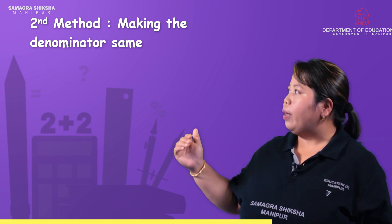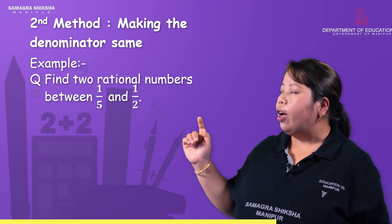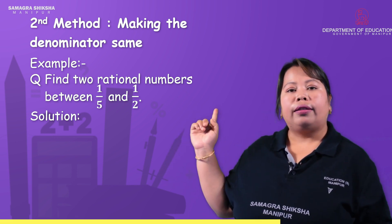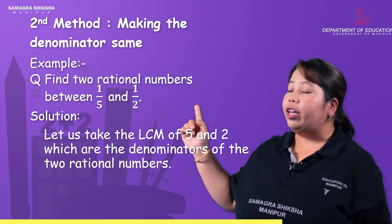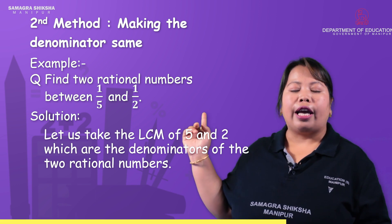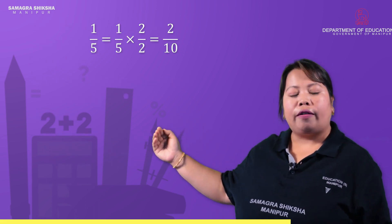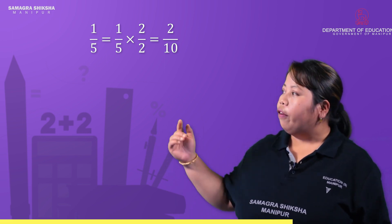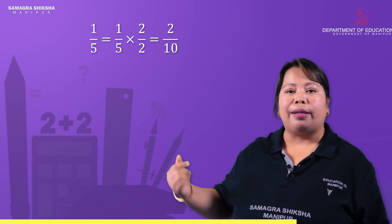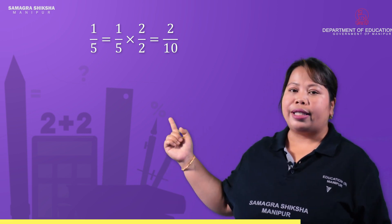For example, find two rational numbers between 1/5 and 1/2. Using Method 2, we find the LCM of the denominators 5 and 2. The LCM of 5 and 2 is 10. So we convert 1/5 and 1/2 to equivalent fractions with denominator 10.